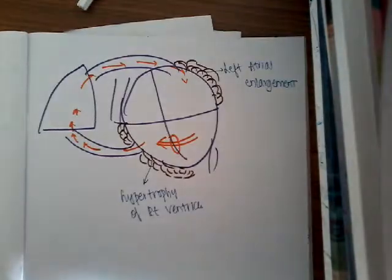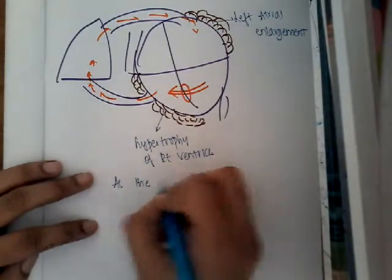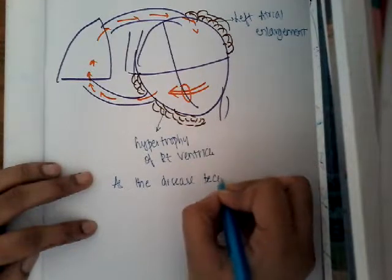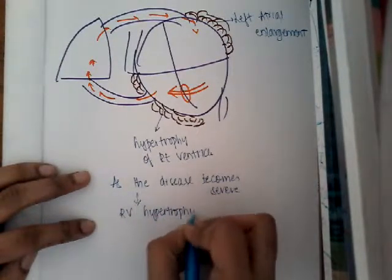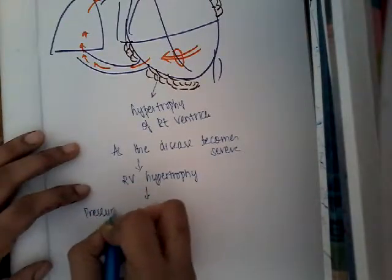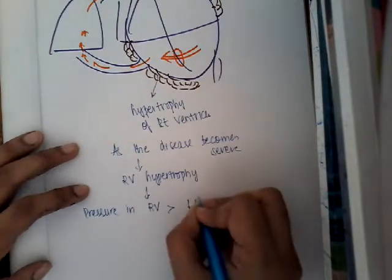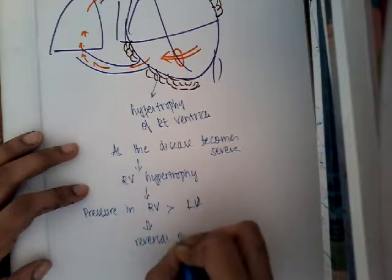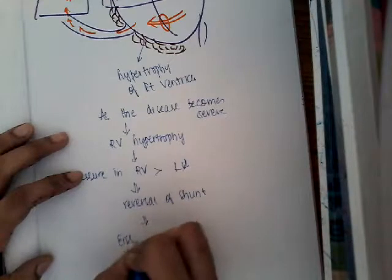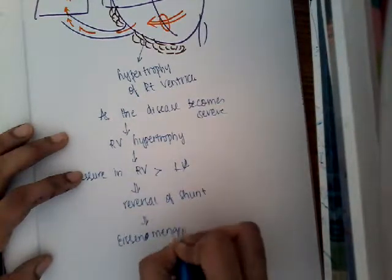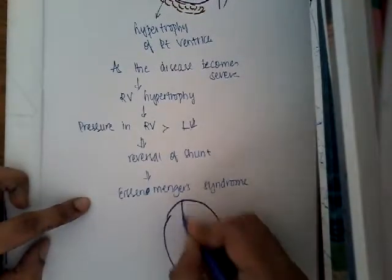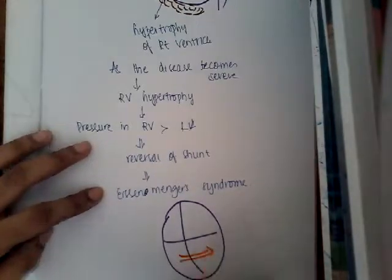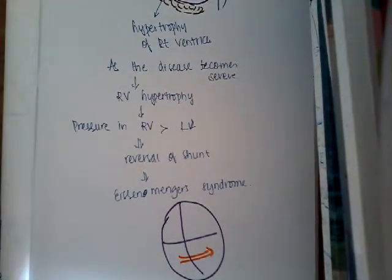As the disease becomes severe, increasing right ventricular hypertrophy eventually raises right ventricular pressure above left ventricular pressure, leading to reversal of the shunt — called Eisenmenger's syndrome. In Eisenmenger's syndrome, blood from the right ventricle flows into the left ventricle instead. This concludes the pathophysiology of ventricular septal defects.